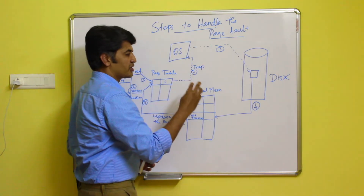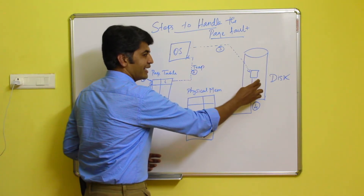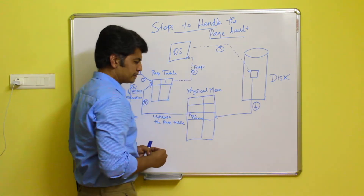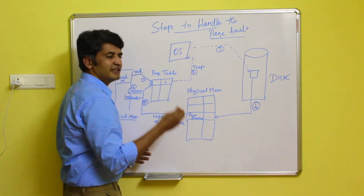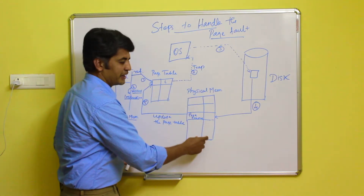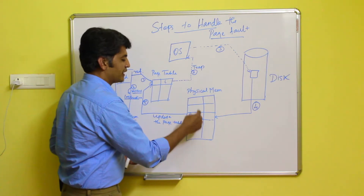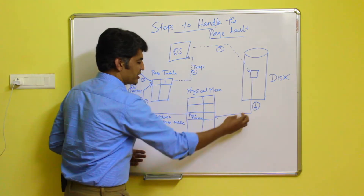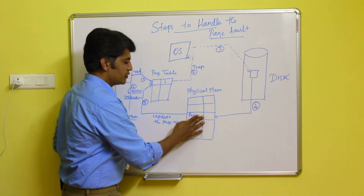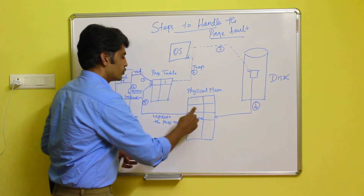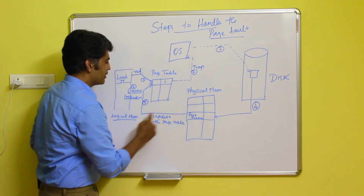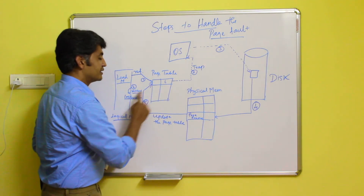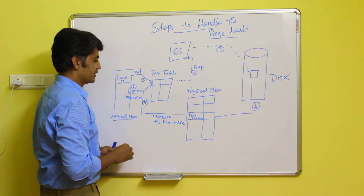The operating system finds what information is required and identifies it in the disk. After identifying the exact page information, it identifies a free frame in the physical memory — this may be called the victim frame. The page information is then loaded into the free frame, and the frame number is noted and updated in the page table for execution. Then the particular instruction is restarted.